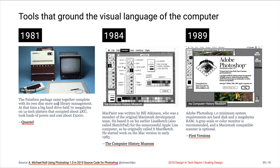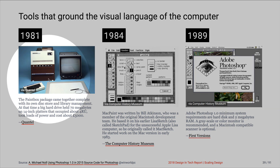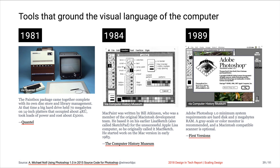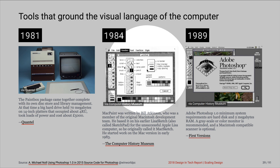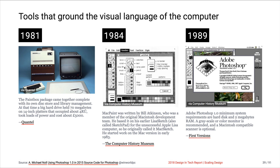In 1981, there was this thing called the Quantel Paintbox. It was a magical way to create videos and paint on them. It was extraordinary. Then in 1984, Mac Paint — the first example of a consumer-class painting system — was a big deal. Drawing ellipses until that time were impossible. You would drag and drag and wait for the ellipses to catch up. But no more. Mac Paint changed everything.